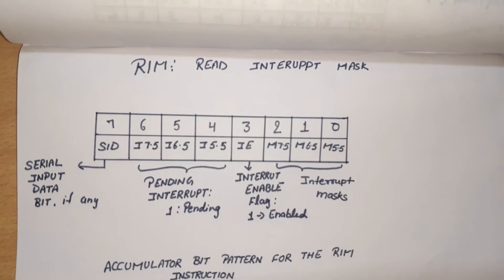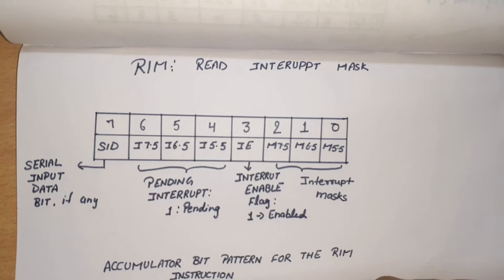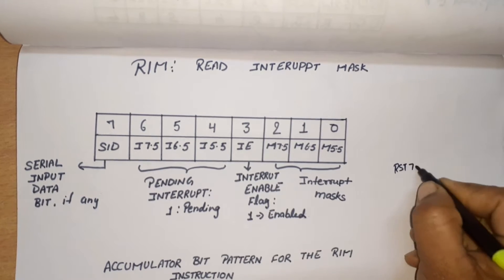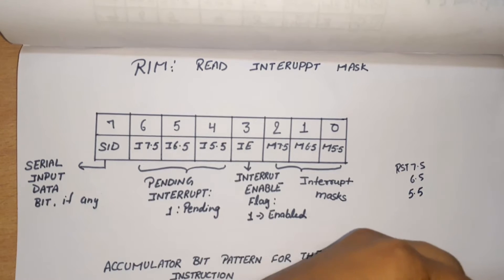In this video I will discuss the RIM instruction. RIM instruction is basically used for maskable interrupts of 8085: RST 7.5, 6.5, and 5.5. We've learned about the SIM instruction before. I will discuss the difference between SIM and RIM at the end of this video after explaining RIM.